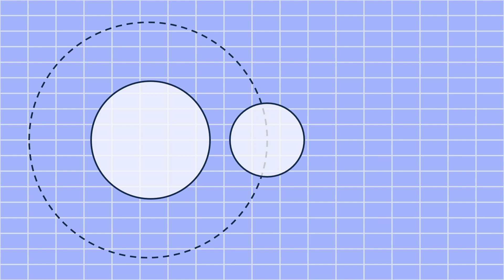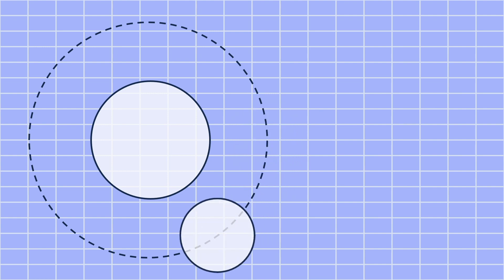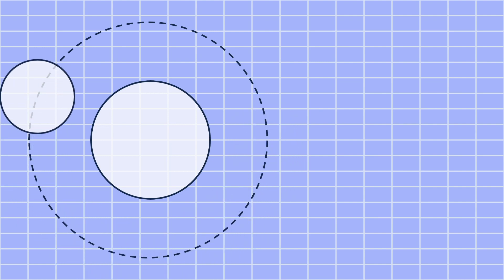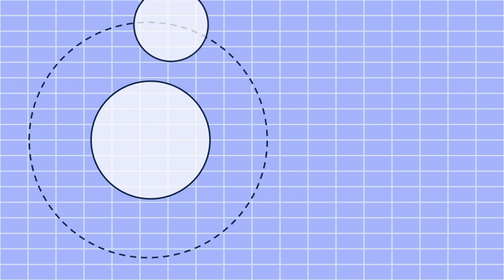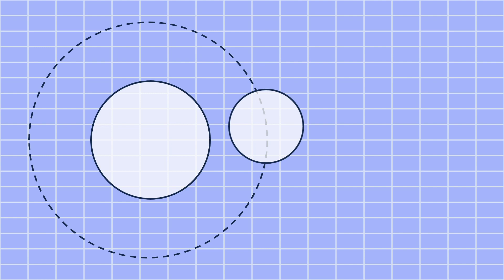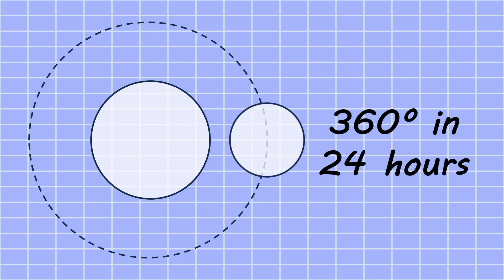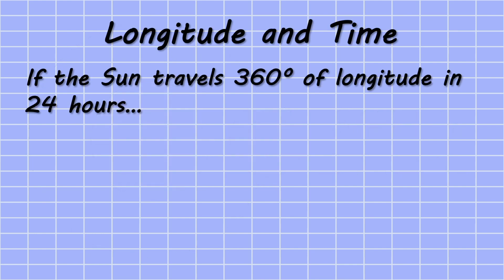Now if we imagine that the Sun goes around the Earth in 24 hours, we can say that one full rotation of the equator — i.e. 360 degrees — happens in 24 hours. This is the underlying theory behind longitude and time and means that we can subdivide 360 degrees to give us smaller values.